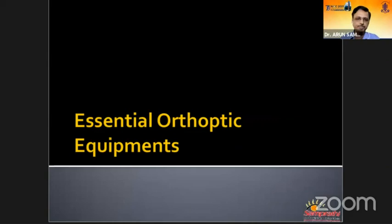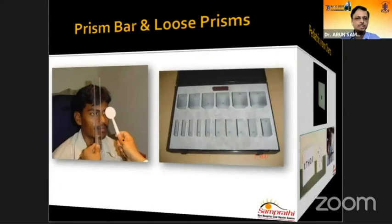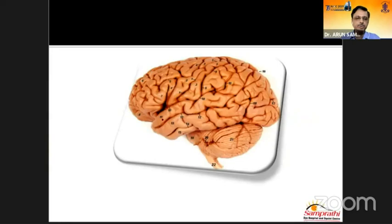A few essential equipment pieces we need: most importantly, the accommodative target. With totally straight eyes, the moment you put the accommodative target, you can get a gross esotropia. Then you need occluders, prisms to measure the squint, pediatric vision charts — particularly in preschool children — and stereo equity charts. And most importantly, the brain which is tuned to seeing strabismus cases.